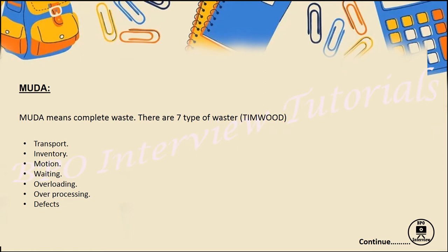Let's start the first one which is Mura, meaning complete waste. As per the Toyota production system, they came up with 7 types of waste known as TIMWOOD — T for Transport, I for Inventory, M for Motion, W for Waiting, O for Overloading, O for Over-processing, and D for Defect. Not all 7 types of waste will be present at every time — it depends on the work, process, production, industry, and company. You find your appropriate waste and eliminate it.